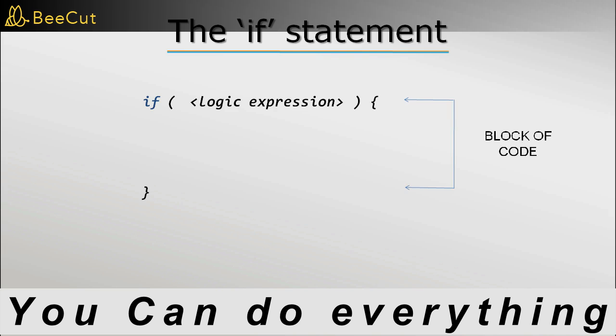Then we open a curly brace and then close the curly brace in the next line. And inside this block of code, we write the statements which will be executed only when the logic expression evaluates to true. If it is false, then the code inside this block is not executed. So it is only executed when the logic expression evaluates to true.